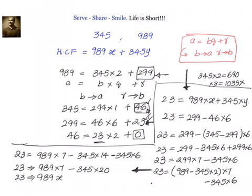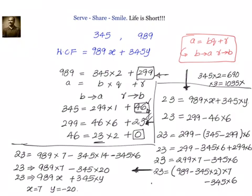Comparing with 989·x + 345·y, we get x = 7 and y = −20. So the values of x and y are 7 and −20. We can write: 23 = HCF(345, 989) = 989 × 7 − 345 × 20.